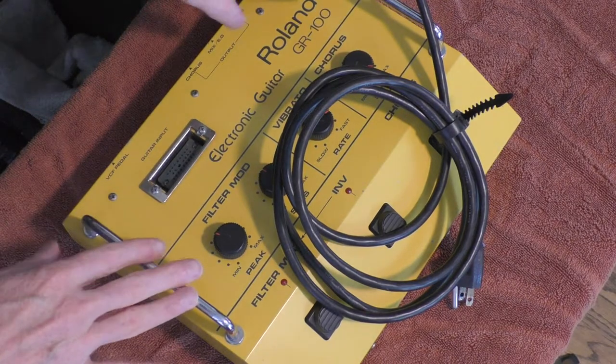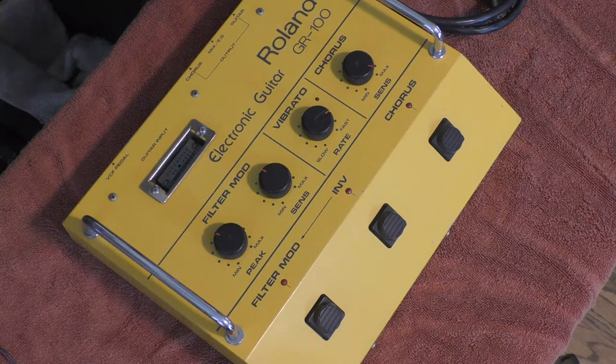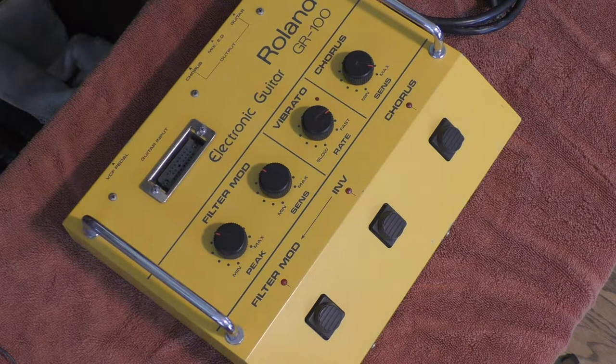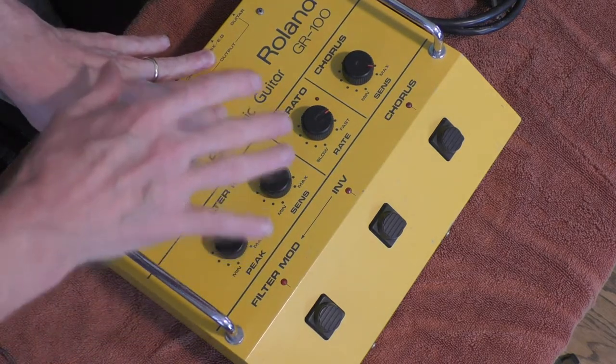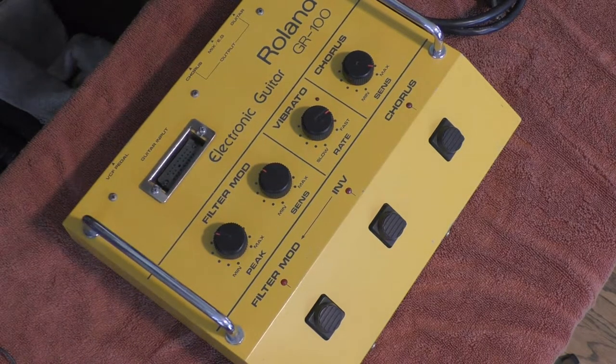If you have a Roland GR100 or Roland GR300, this is the one modification that you really must do. What we're going to do is replace the internal blue tantalum power supply capacitors. There are two of them.